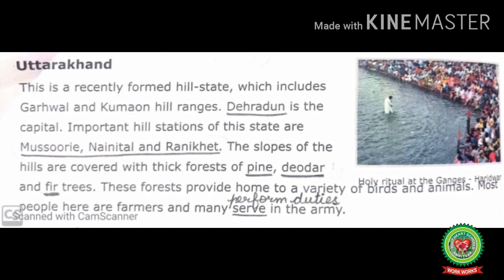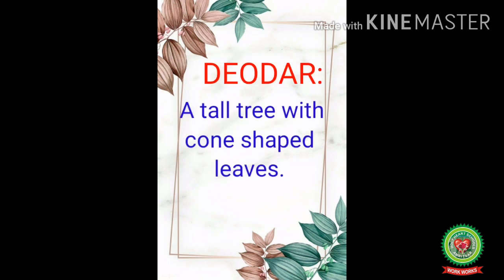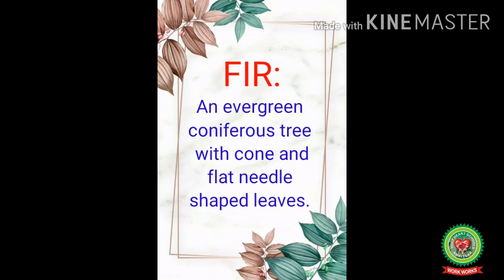Uttarakhand is a recently formed hill state which includes Garhwal and Kumaon hill ranges. Dehradun is the capital. Important hill stations of this state are Mussoorie, Nainital, and Ranikhet. The slopes of the hills are covered with thick forests of pine, deodar, and fir trees.